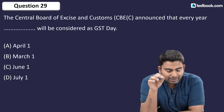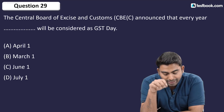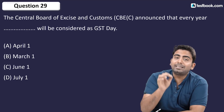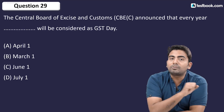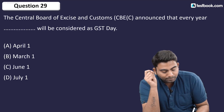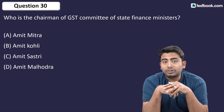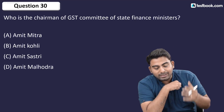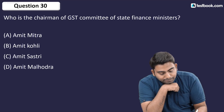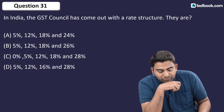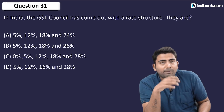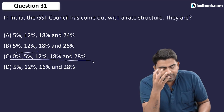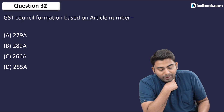Question number 29: The Central Board of Excise and Customs announced that every year, which day will be considered GST Day? The answer is 1st July — the day GST was implemented in the country. Question number 30: Who is the chairman of the GST committee of state finance ministers? The answer is Amit Mitra. Question number 31: The GST Council rate structure is 0%, 5%, 12%, 18%, and 28%.